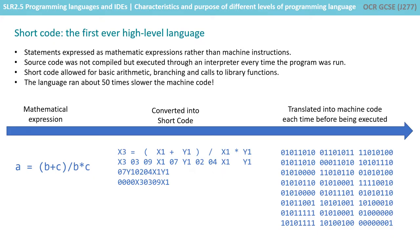Short code, proposed in 1949, was one of the first high-level languages ever developed for an electronic computer. Short code statements represented mathematical expressions in an understandable form. However, the program had to be translated into machine code every single time it ran, making the process much slower than running the equivalent machine code.